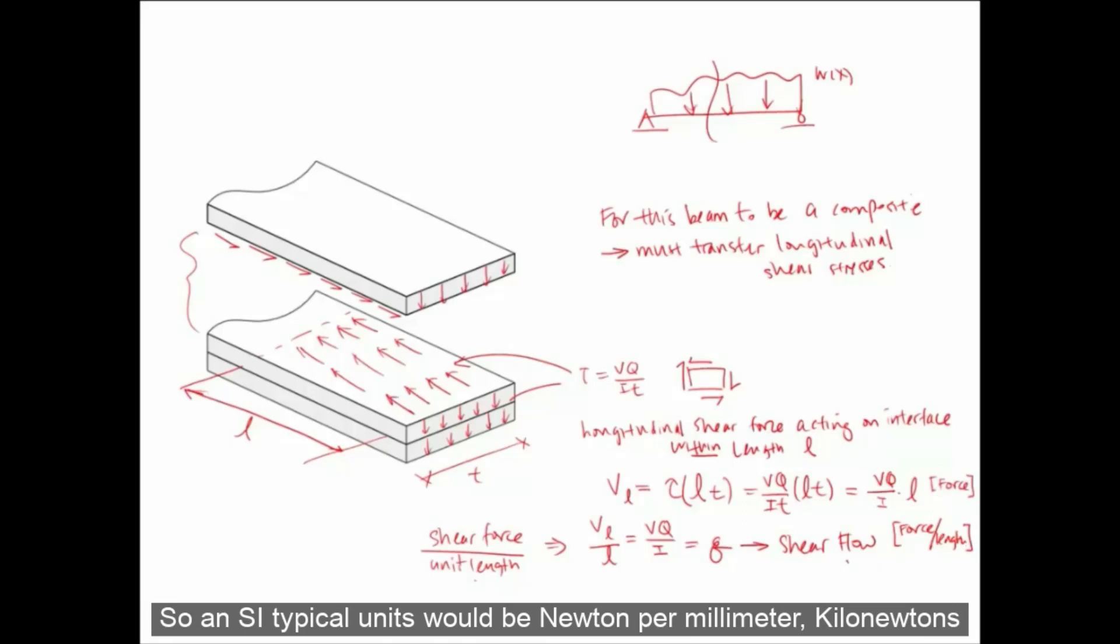So in SI, typical units would be Newton per millimeter, kilonewton per meter. Or in imperial, we would have pounds per inches.